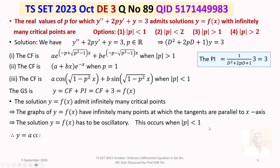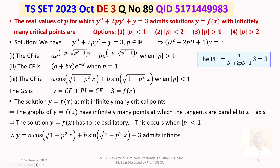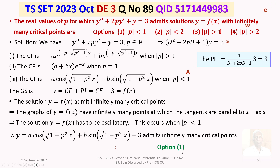So y = A cos(√(1−p²) x) + B sin(√(1−p²) x) + 3 admits infinitely many critical points when |p| < 1. This corresponds to option 1, so the answer to this question is option 1.